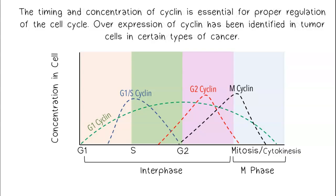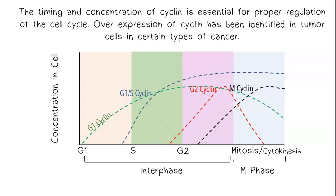The timing and concentration of cyclin is essential for proper regulation of the cell cycle. Overexpression of cyclin has been identified in tumor cells in certain types of cancer.